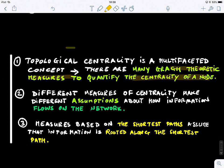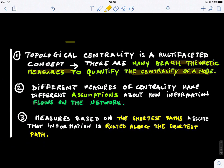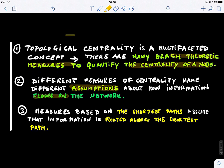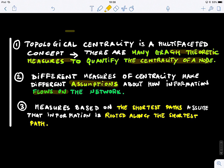Now, different measures of centrality make different assumptions about how information flows on the network. So for you guys to know which centrality measure to use, you need to know these assumptions, the inherent assumptions behind each measure. And we talked about this in the previous lecture. So measures based on the shortest paths assume that information is rooted along the shortest path. And this is not always the case.